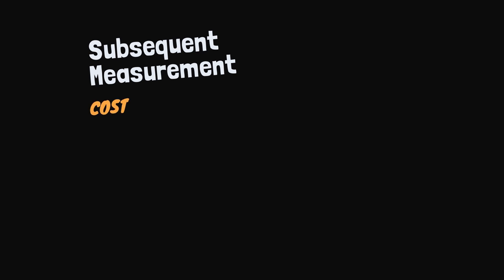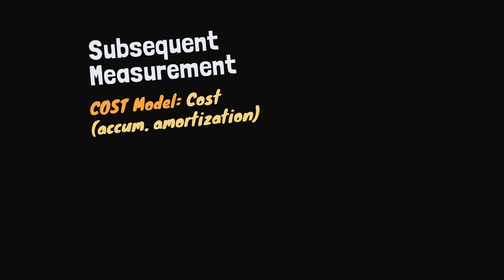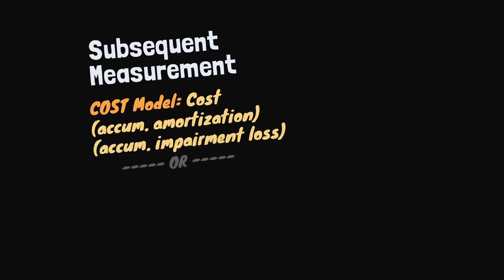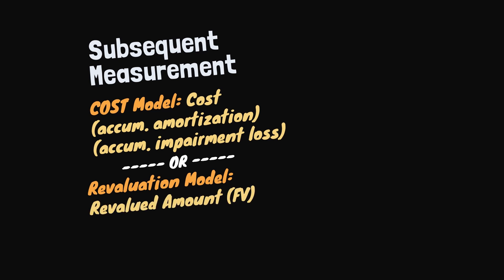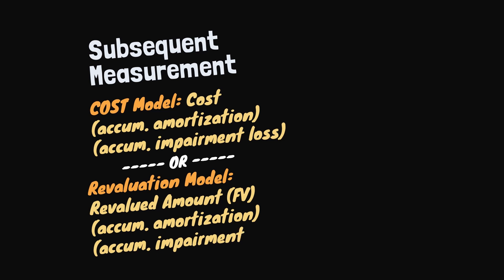For subsequent measurement, the entity can choose between the cost model or the revaluation model. Under the cost model, the intangible asset is carried at cost less accumulated amortization, less accumulated impairment losses. The revaluation model has the same structure, only that we use the revalued amount — the fair value of the asset in an active market.